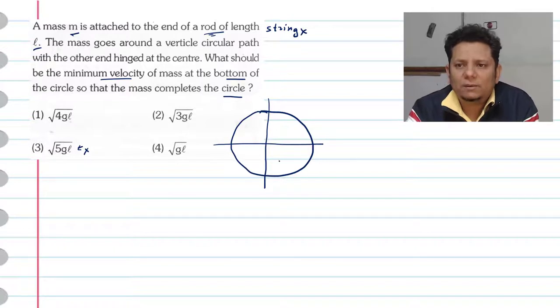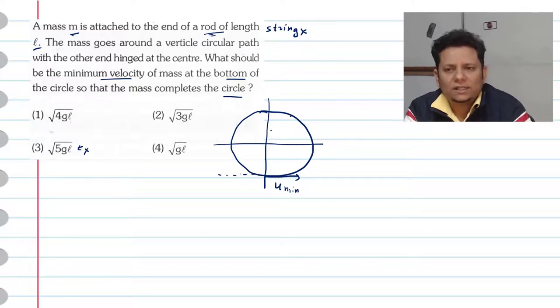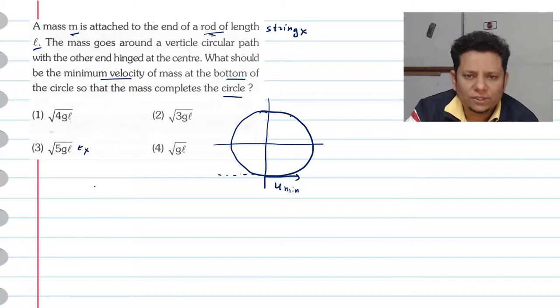In the string case, we need minimum velocity at the top where tension must be positive. But for a rod, tension can be zero or even negative. So here we can use energy conservation.